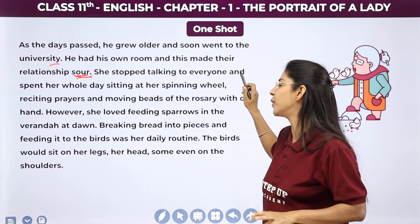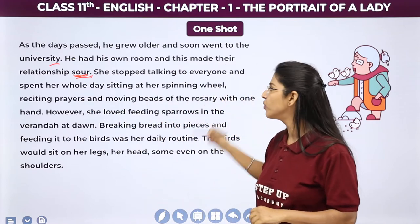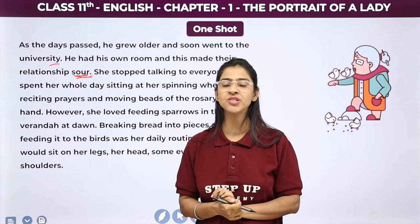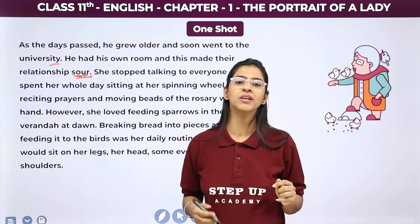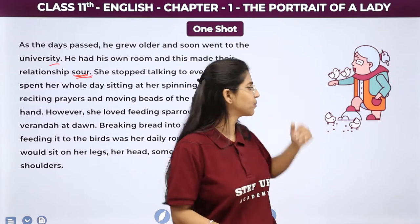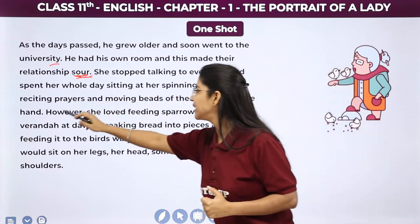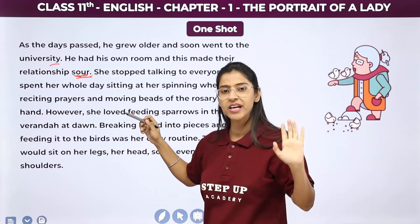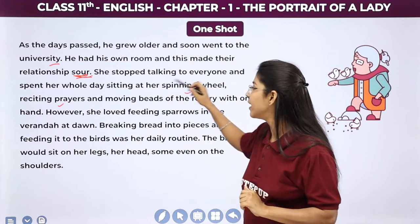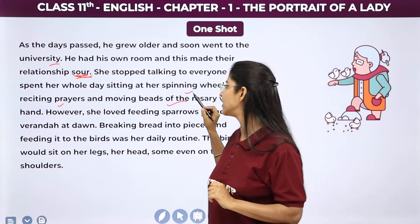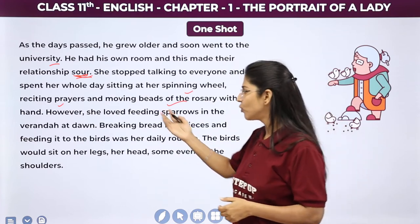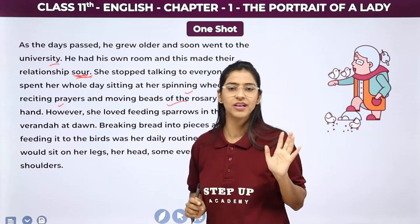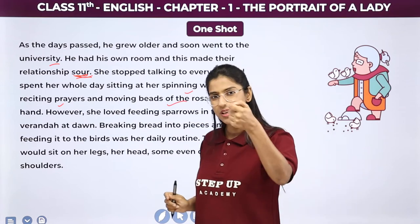She stopped talking to everyone and spent her whole day sitting at her spinning wheel. Unhone sabse baat karna chhod diya, kyunki unko aisa lagta tha sab city life mein busy hain. Wo apna zyada tar time spinning wheel mein — charkha chalate hue — bitaati thi. Reciting prayers, apni spinning wheel pe baith ke mala japti rehti thi, aur unke lips move karte rehte the — silent prayers. Pura time wo prayers gaati rehti thi, aur ek haath mein beads of rosary ke saath mala japti rehti thi.